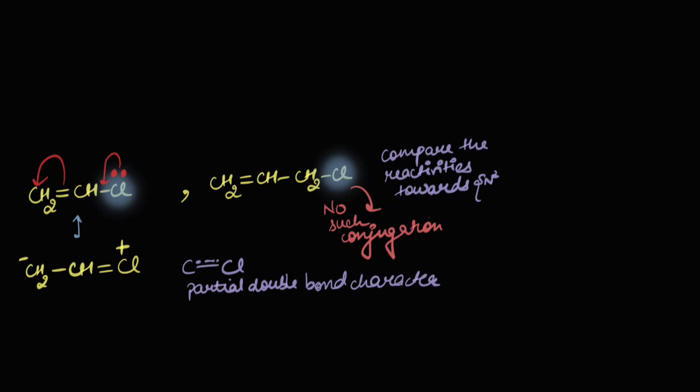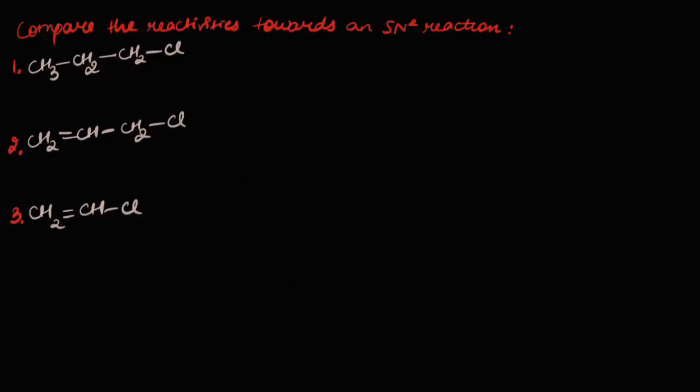But would the first one even want to react? The bond is very difficult to break — it wouldn't break easily. So vinylic halides or vinylic substrates do not undergo nucleophilic substitution reactions via the SN2 pathway. In the third example, we have to compare the reactivities of three substrates towards an SN2 reaction. Looking carefully at the third one: the lone pair on the chlorine atom is alternate to the pi bond and would be involved in resonance. So there is resonance in the third case — there is a partial double bond character in the C–Cl bond, and therefore the third one would be non-reactive towards an SN2 reaction.